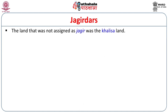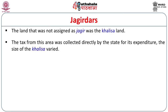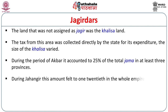The land not assigned as Jagir was the Khalisa land — an area from where direct tax would go to the state. The size of the Khalisa varied from time to time. During the period of Akbar, it accounted for about 25% of the total Jamma in at least three provinces. During Jahangir, this amount fell to one-twentieth of the whole empire. Shah Jahan again raised this amount to one-seventh.